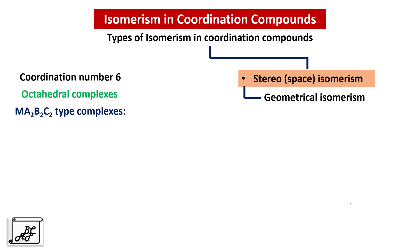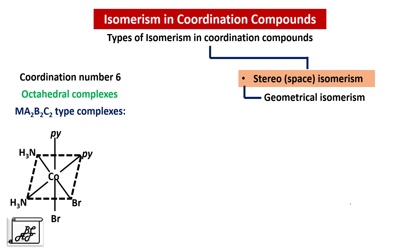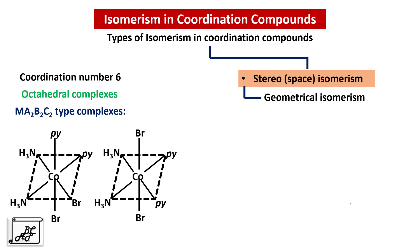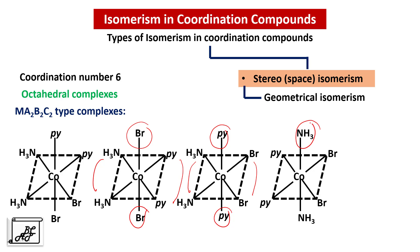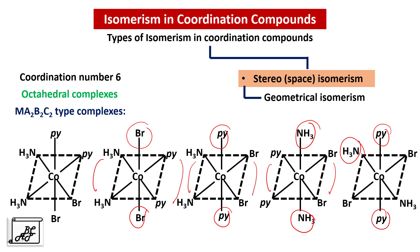Let us move to MA2B2C2 type complexes, where three types of ligands are present in an octahedral complex. In the first isomer, two pyridine, two bromine, and two ammonia molecules are all on the same side. In the second isomer, two bromine atoms are on the opposite side while two pyridine and two ammonia are on the same side. In the third isomer, two pyridine are on the opposite side with two bromine and two ammonia on the same side. In the fourth isomer, two ammonia are on the opposite side with bromine and pyridine on the same side. In the fifth isomer, pyridine, ammonia, and bromine are all on the opposite side. Among these five isomers, the first is called the cis isomer and the last is called the trans isomer.